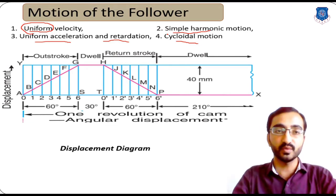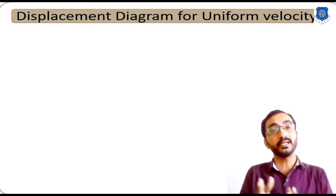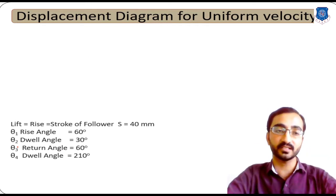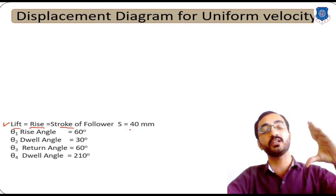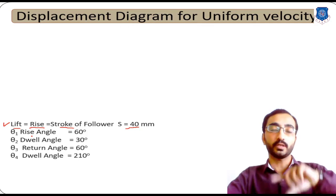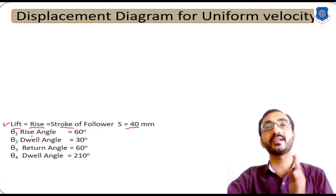Let's start with the displacement diagram for uniform velocity — that is, a body or particle moving with constant velocity. To plot the displacement diagram, we need some parameters. For example, the total displacement or stroke of the follower — let's consider it as 40 mm. During one rotation of the cam, that is 360 degrees, this 360 degrees is divided into four different phases.